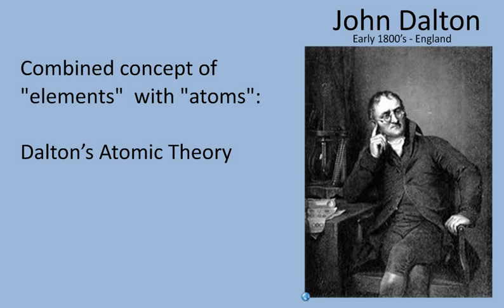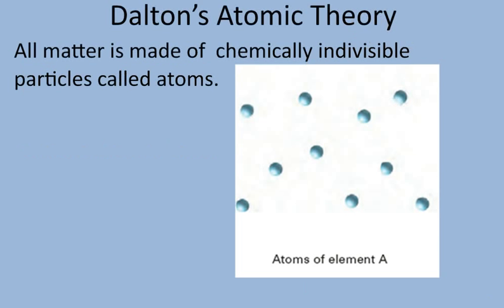Fast forward to the early 1800s. John Dalton was a school teacher who combined this concept that elements existed with the idea that atoms, particles, existed into what we call Dalton's atomic theory. Dalton's atomic theory has several parts. The first part says that all matter is made up of chemically indivisible particles called atoms. Indivisible, of course, means you cannot break them down. Each one of these particles, according to Dalton, is an atom.